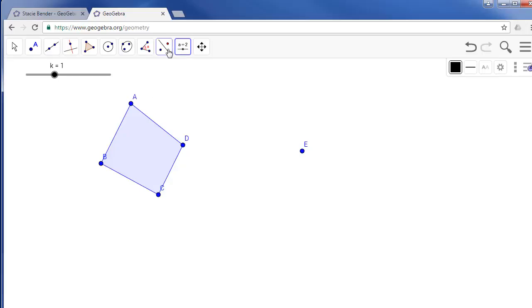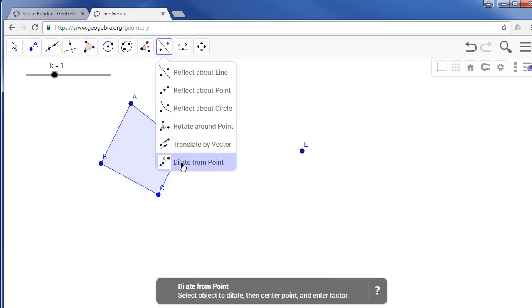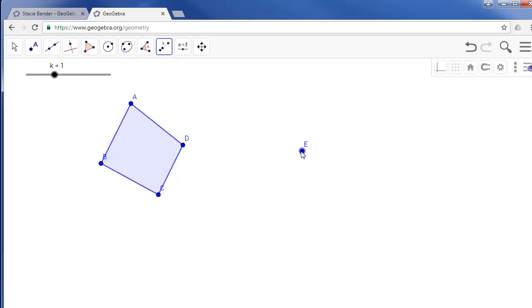Next we need to grab the dilate from point tool, choose your polygon, then choose your point and let K be your scale factor. Now move the scale factor to find out how this impacts your new polygon.